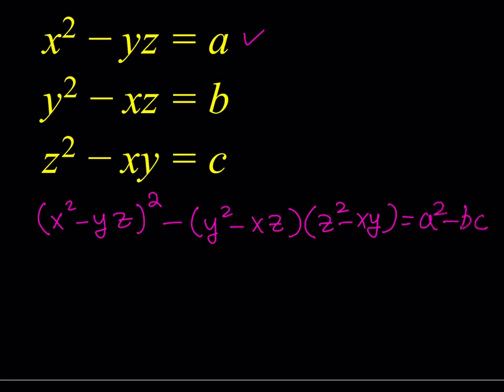Notice that the first equation is X squared minus YZ, and our result is A squared minus BC — there seems to be some relationship between those. Also, Y squared Z squared cancels out right away. Let me expand this. If you square the first equation, you get X to the fourth minus 2X squared YZ plus Y squared Z squared.